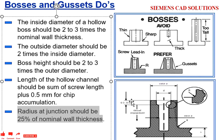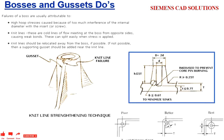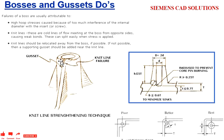Here they are talking about the failures of screw bosses. High stress loops occur because of too much interference of the internal diameter with the insert. The internal diameter is created with the help of an insert; if your insert length is more, it will cause damage to the boss. Weld line is nothing but where the material flows and joins. If the weld line comes on the gusset, it will create a defect on that area and the boss can split easily.